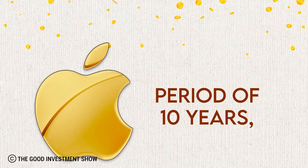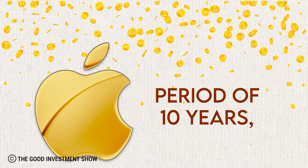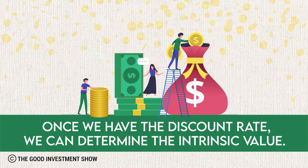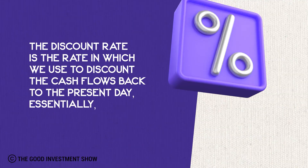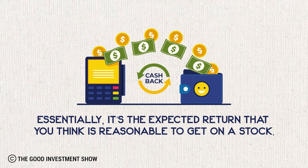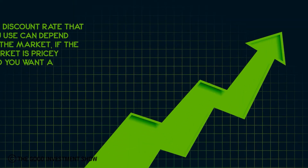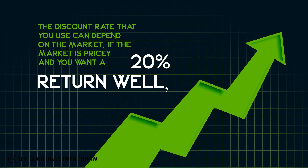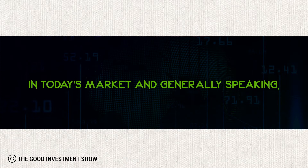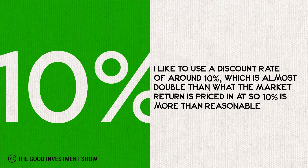Now we have all the cash flows we expect to get for Apple across a 10-year period. The final ingredient we need is the discount rate. The discount rate is the rate we use to discount the cash flows back to the present day — essentially, it's the expected return that you think is reasonable to get on a stock. The discount rate depends on the market: if the market is pricey and you want a 20% return, you'd find it very hard. In today's market, I like to use a discount rate of around 10%, which is almost double what the market return is priced in at, so 10% is more than reasonable.